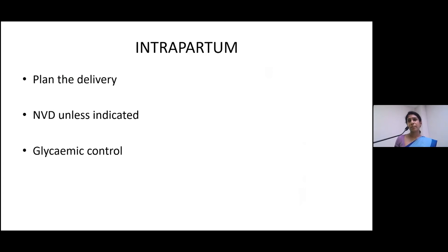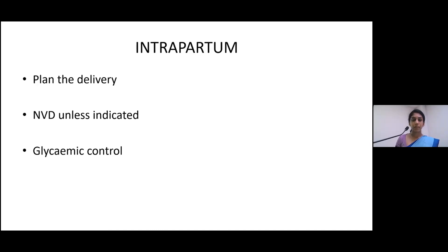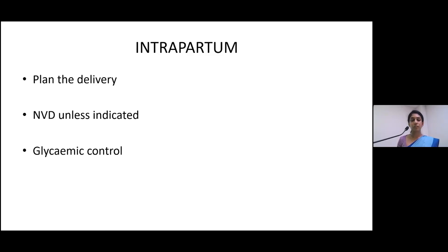During the intrapartum period, we need to plan the delivery and mode of delivery. Delivery is usually planned around 38 weeks of gestation. Glycemic control during labor should be maintained, with a blood glucose target of 70 to 110 mg/dL during the intrapartum period. Insulin regimes may be unique to different units — it is a very personal plan of management.